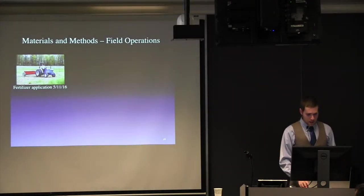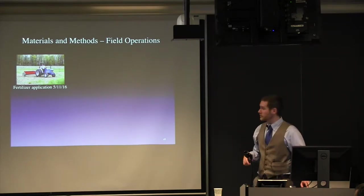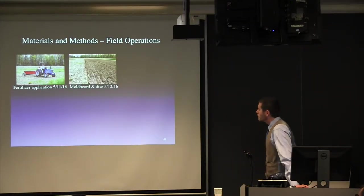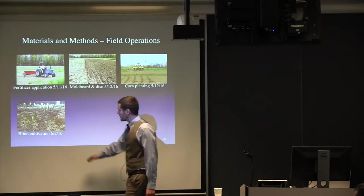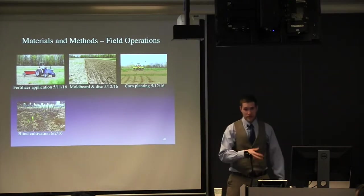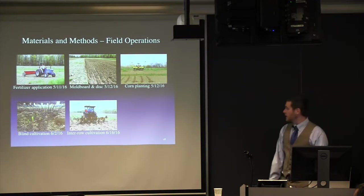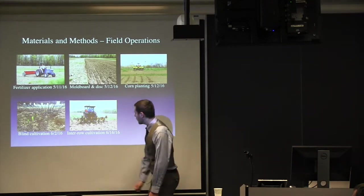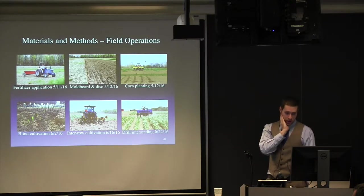And to give everybody a sense of field operations, and why I was skipping class at the end of last year's semester. Fertilizer application in early May, moldboard and disking the following day, and planting on that same day. We had two blind cultivation events. So, this is essentially dragging a very large rake behind the tractor, which is set at a pressure that's enough to pull up the weeds that have emerged, but not quite enough to hurt the corn. So, two of these, and then once the corn gets a little bigger, you have to switch methods, and we did interrow cultivation. So, this is just targeting in between the crop rows with the S-tine there. And then, just a little more than a month after we planted the corn, we interseeded the cover crops.